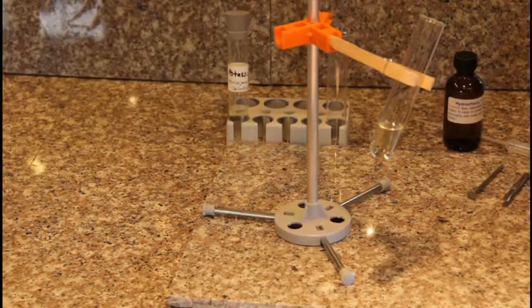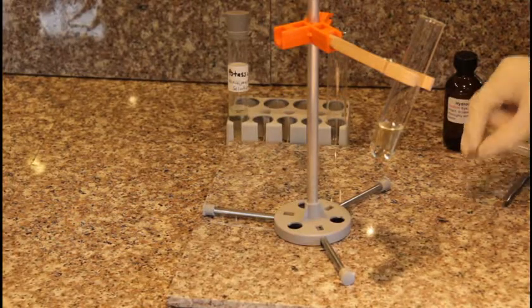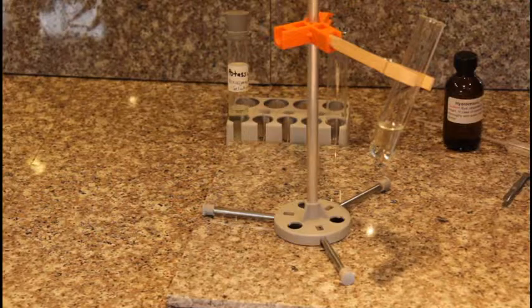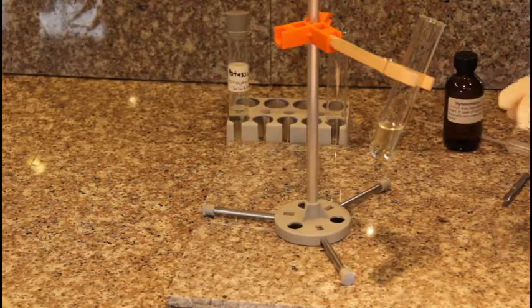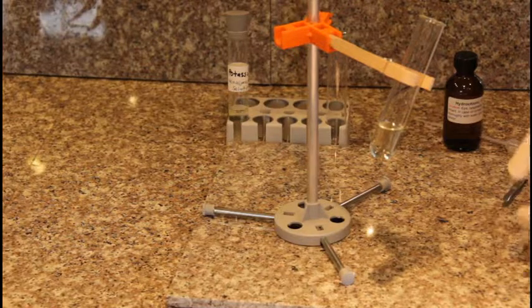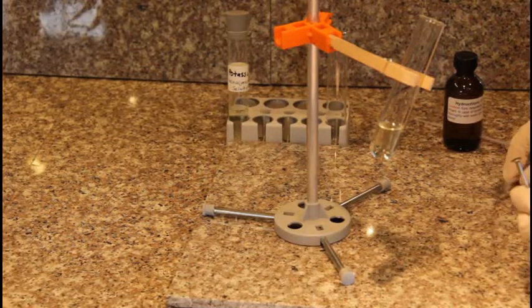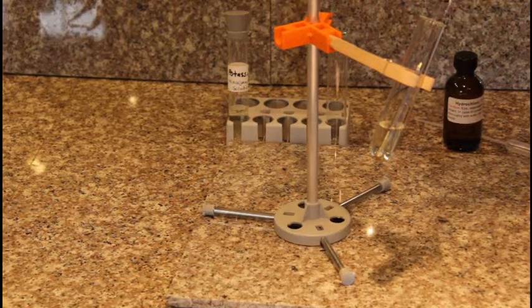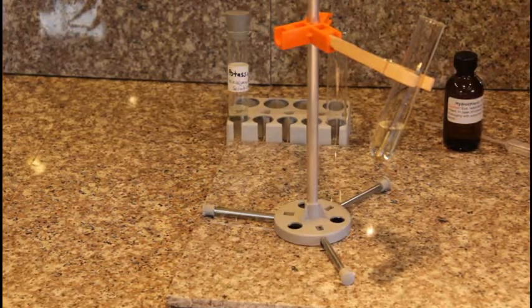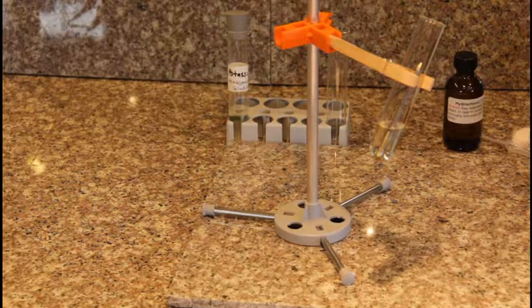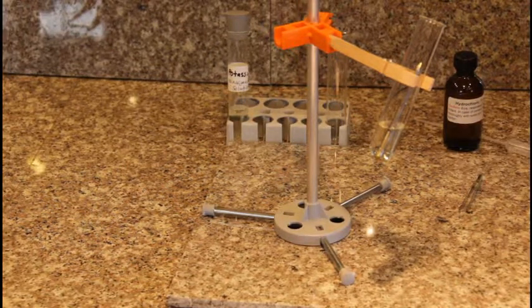To do experiment number 16, I am going to put a nail into this test tube with 2 centimeters or 5 milliliters of potassium hexacyanoferrate solution. You will notice that there is no blue color this time.